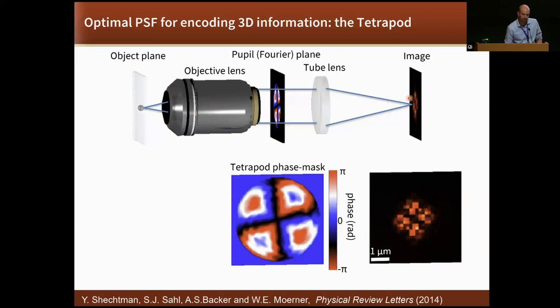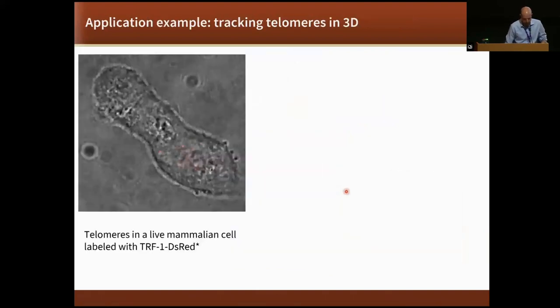This specific phase mask was designed by solving an optimization problem. Given a finite number of photons that are emitted from this source, they're going to end up somewhere in this camera. The question is, how should these photons be arranged in space to contain the most amount of information about the 3D position of this molecule? It's really an estimation theory problem. You can quantify the amount of information in this shape regarding the parameter you're trying to estimate, which is z, by a quantity called Fischer information and its related quantity, the Cramer Rao lower bound. This is basically a measure of how quickly this shape changes as a function of defocus. If you just optimize this quantity and tell the computer to solve this optimization problem, this is the result you get.